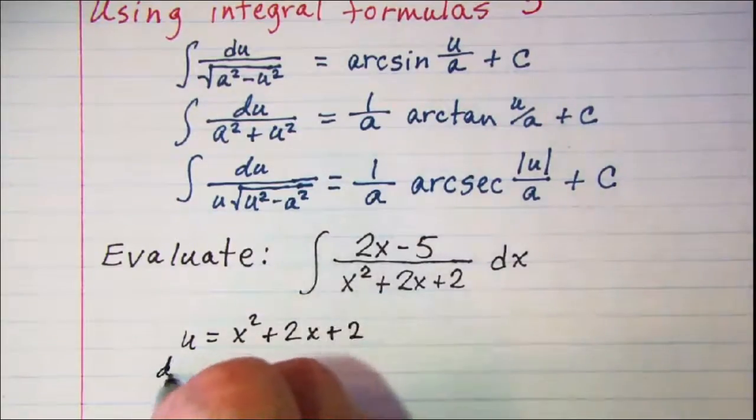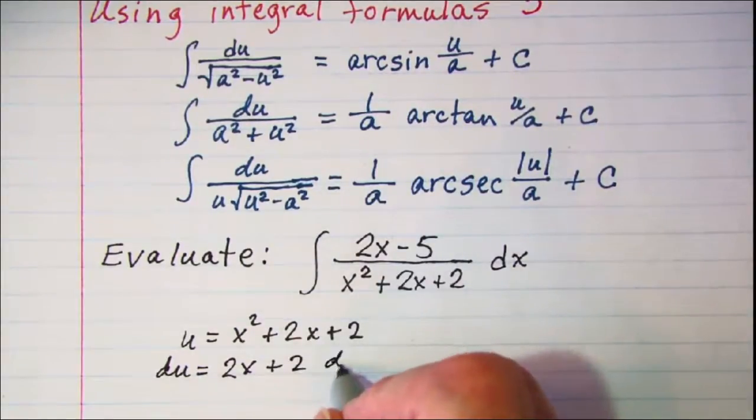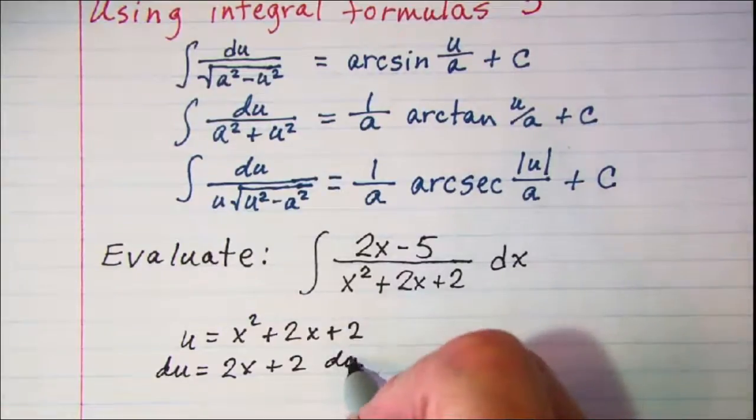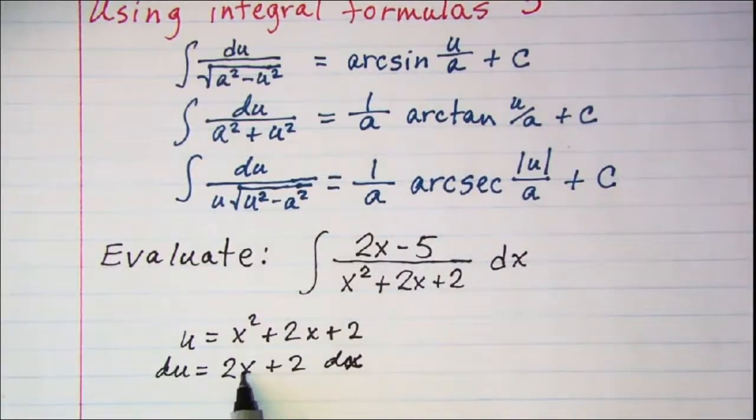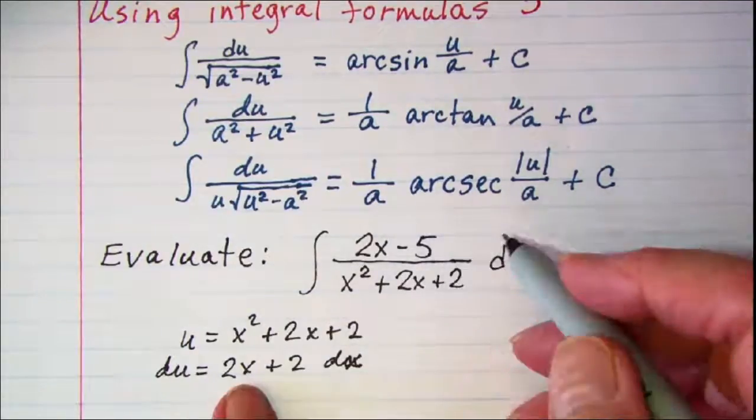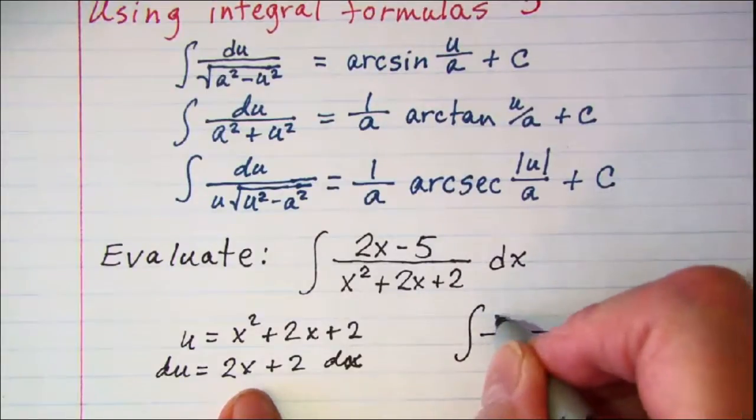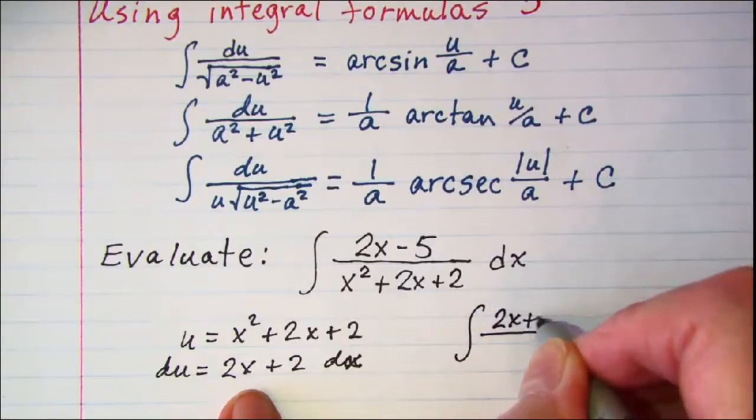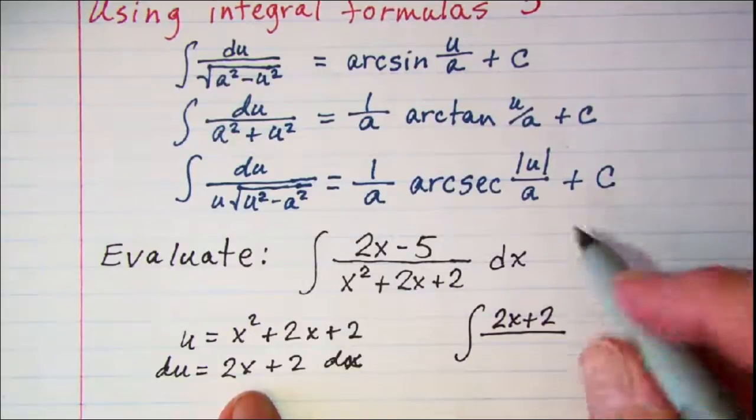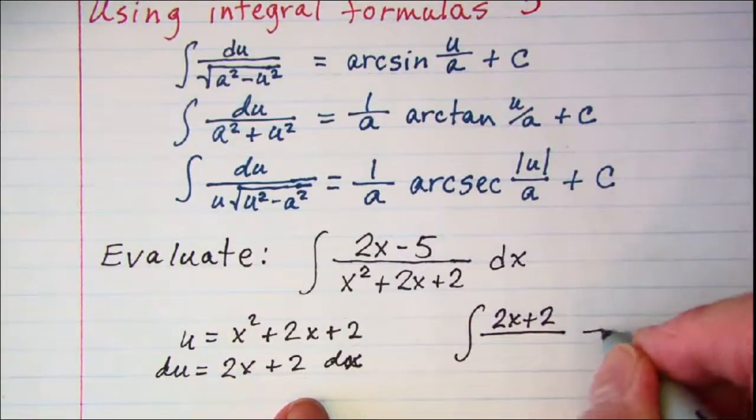Then du is equal to 2x plus 2 dx. Well I have a 2x so I need to separate this and write it as the integral of 2x plus 2 and then to get my negative 5 I'll have minus 7 back here.